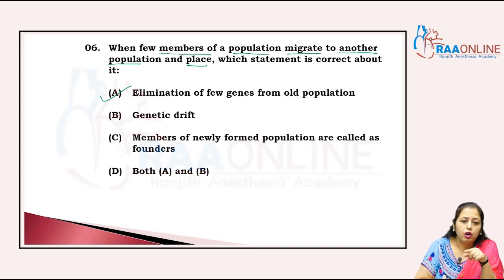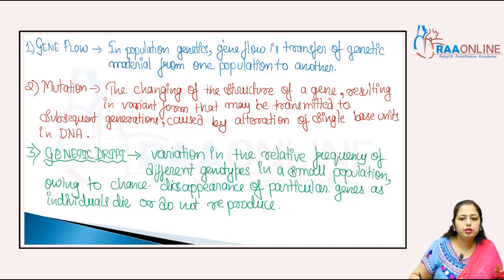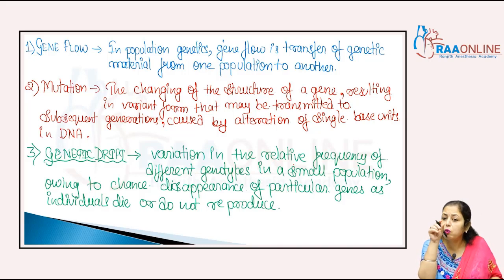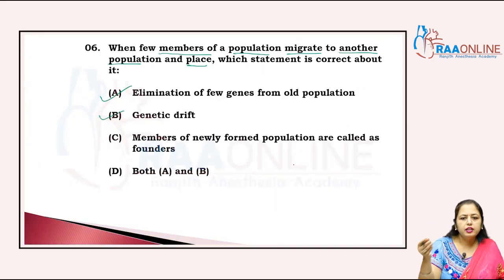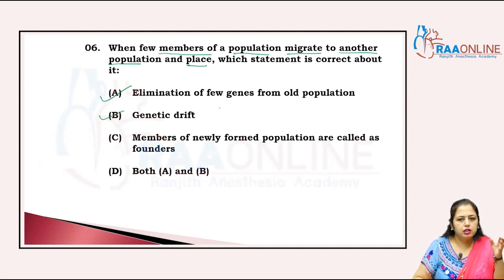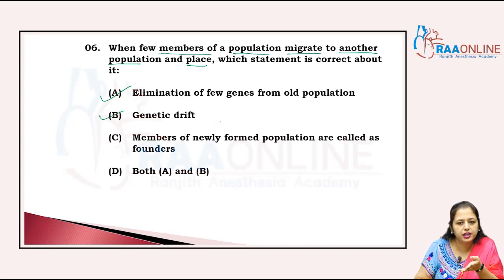Genetic drift — we know that the variation from the relative frequency of the different genotypes in a small population. When these members with their genes migrate from one population to another and replace them, that statement is also correct.